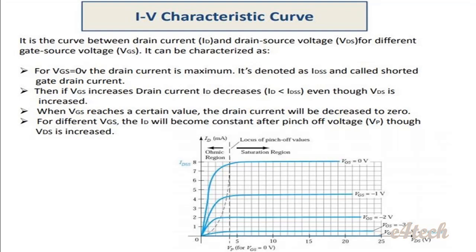When gate-source voltage VGS is equal to 0, the depletion layer thickness is very small and the channel is maximum, allowing maximum drain current. For VGS = 0, drain current is maximum and is noted as IDSS — that is, drain-to-source saturation current, also called short-circuit gate drain current.